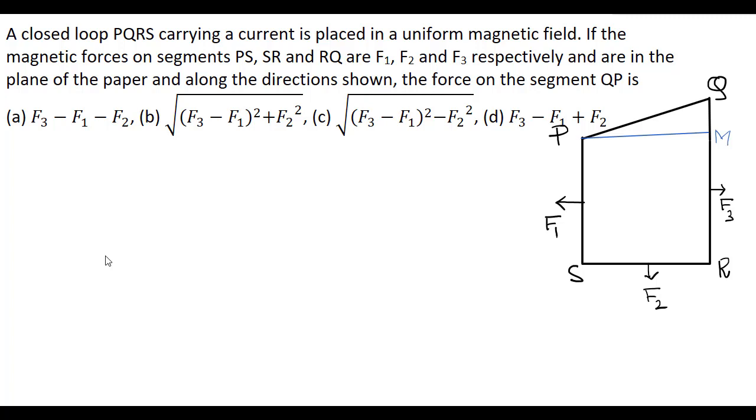A closed loop PQRS carrying a current is placed in a uniform magnetic field. If the magnetic forces on segments PS, SR and RQ are F1, F2 and F3 respectively and are in the plane of the paper along the directions shown, the force on the segment QP is: